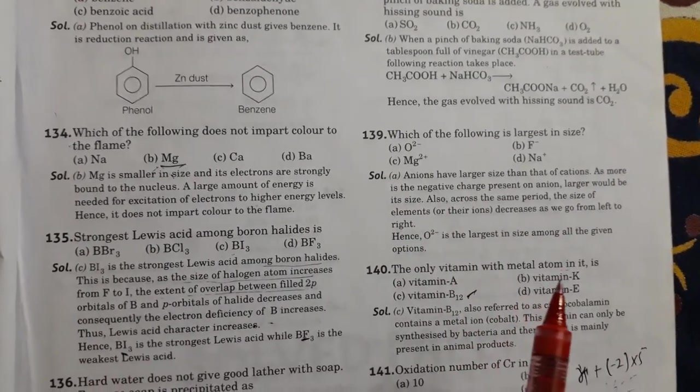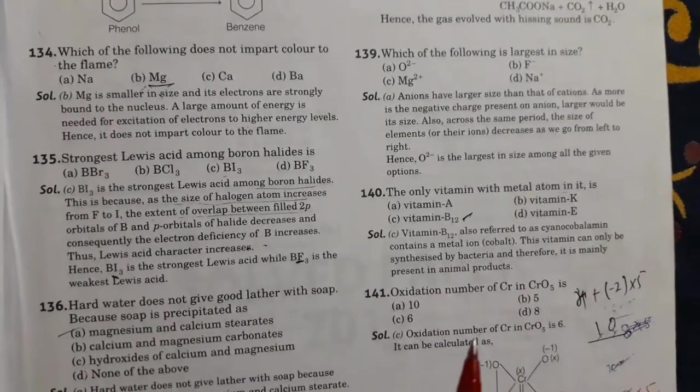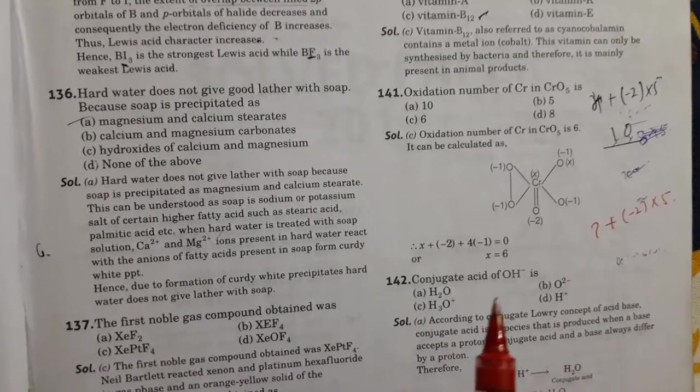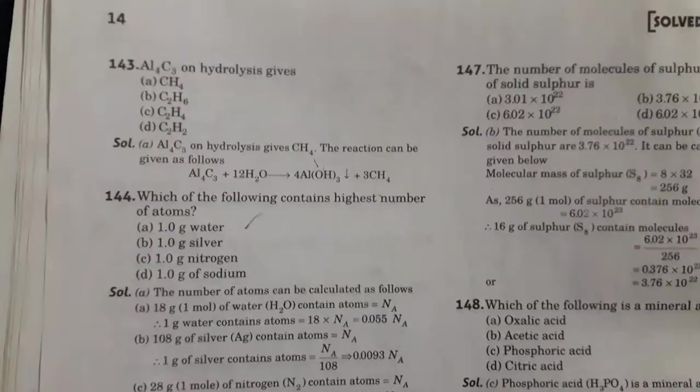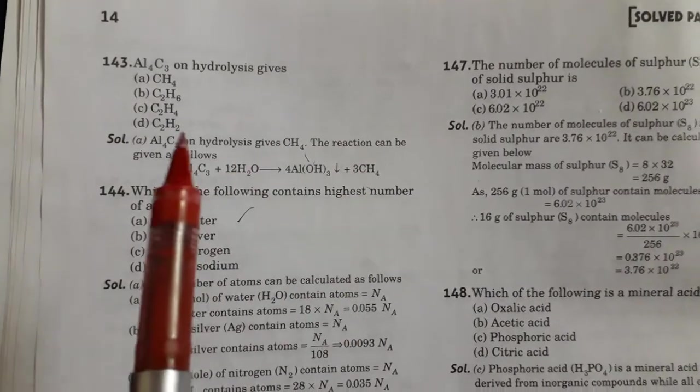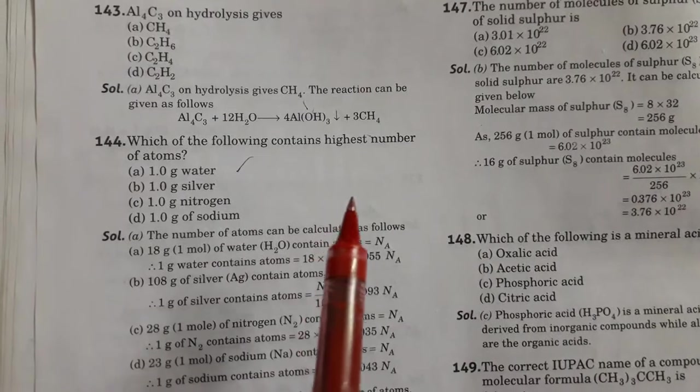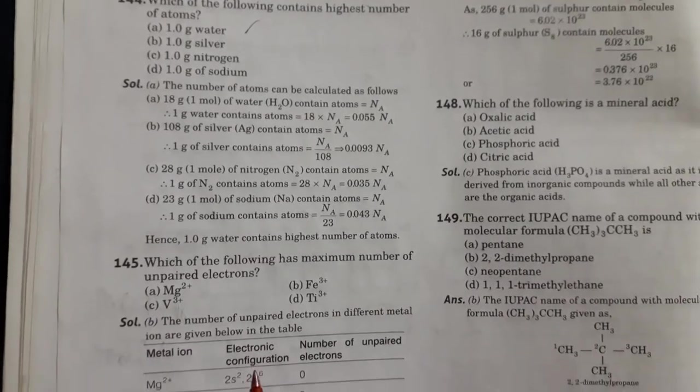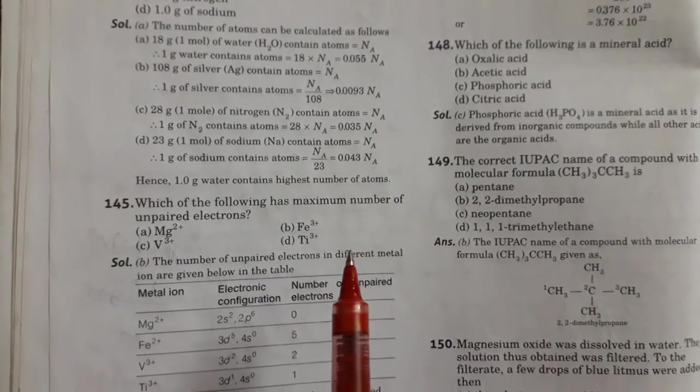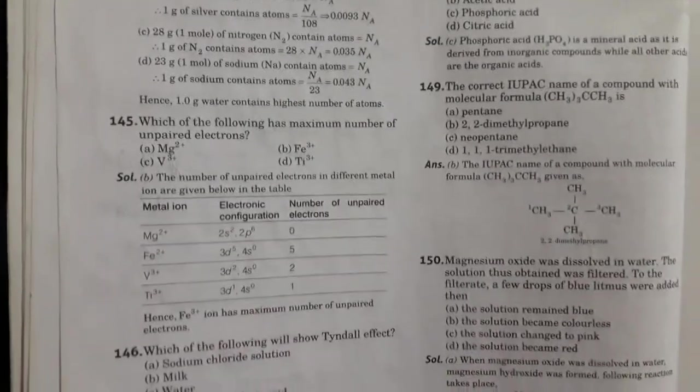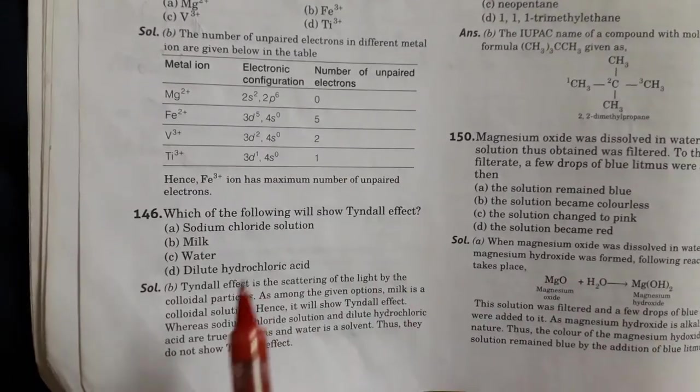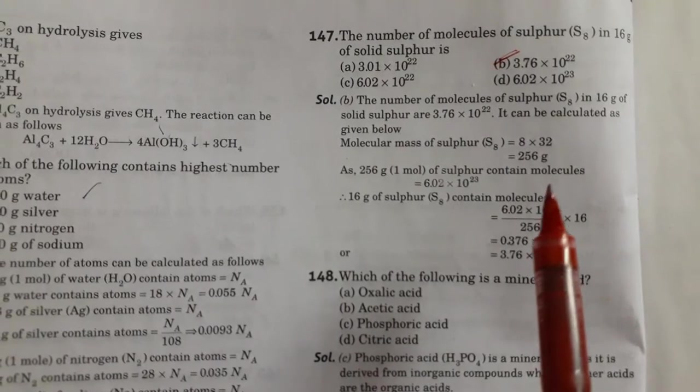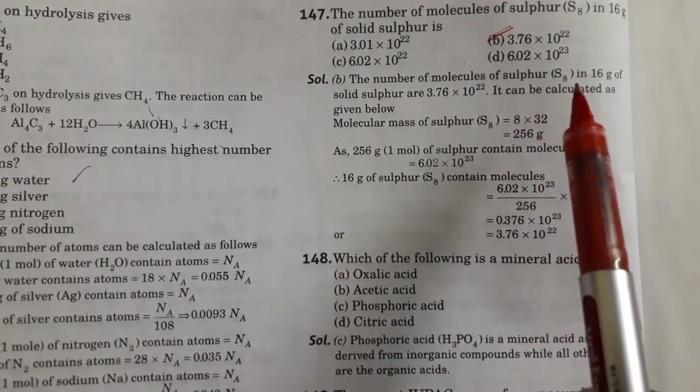Next is the only vitamin with metal atom in it is vitamin B12. Then oxidation number of chromium in CrO5 is 6. Next question is conjugate acid of OH negative is H2O. Option A is right. Next is Al4C3 on hydrolysis gives CH4. Next is which of the following contains highest number of atoms. So 1.0 gram of water contains highest number of atoms. Option A is right. Then which of the following has maximum number of unpaired electrons. So Fe3+ is maximum number of unpaired electrons. Next is which of the following will show Tyndall effect. So the milk shows Tyndall effect. Next question is the number of molecules of sulfur in 16 gram of solid sulfur is 3.76 into 10 raised to 22. Option B is right.